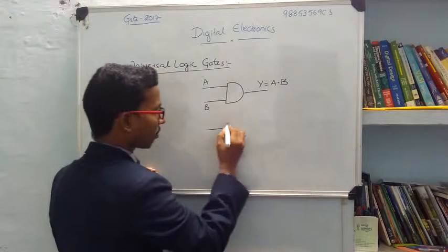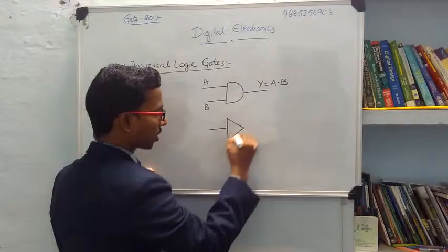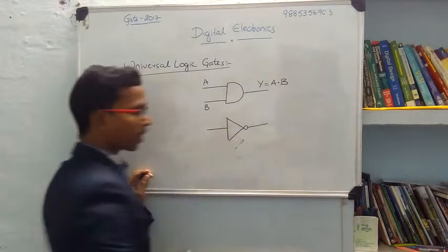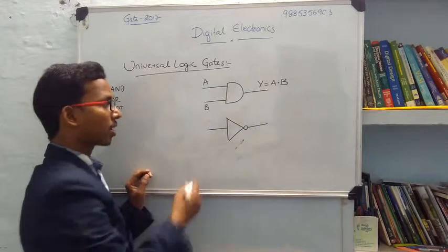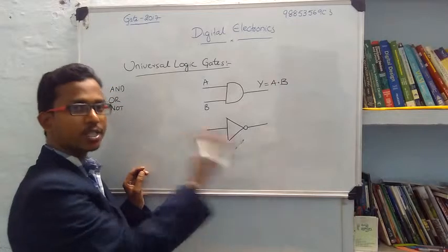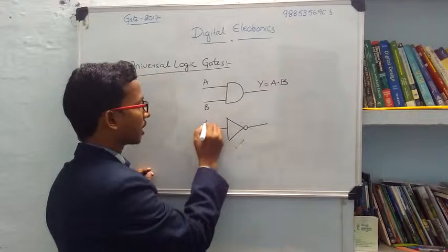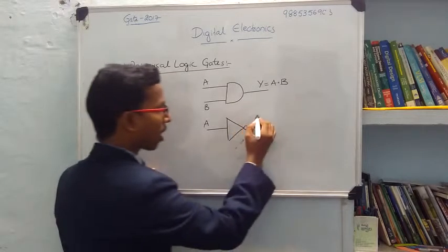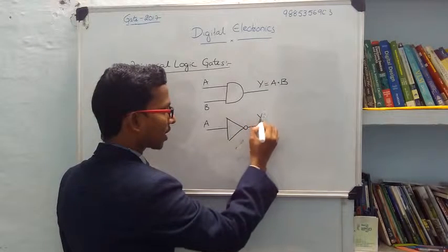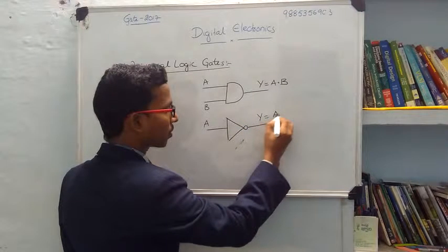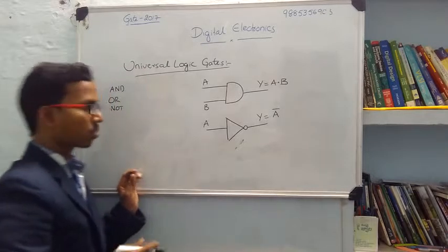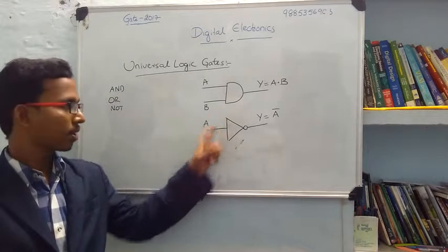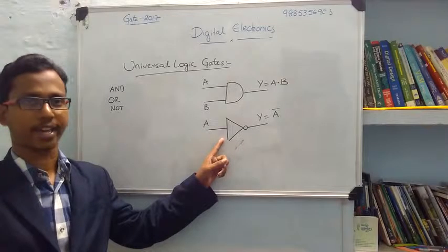We know the inverter. The inverter is like this. What is the function of the inverter? It inverts the given input. That is, if we give the input as A, the output we get is Y equals A bar. This is the AND gate. This is the NOT gate.